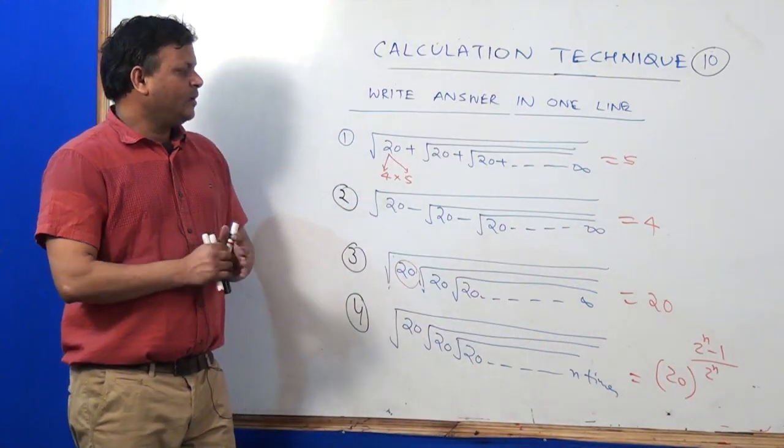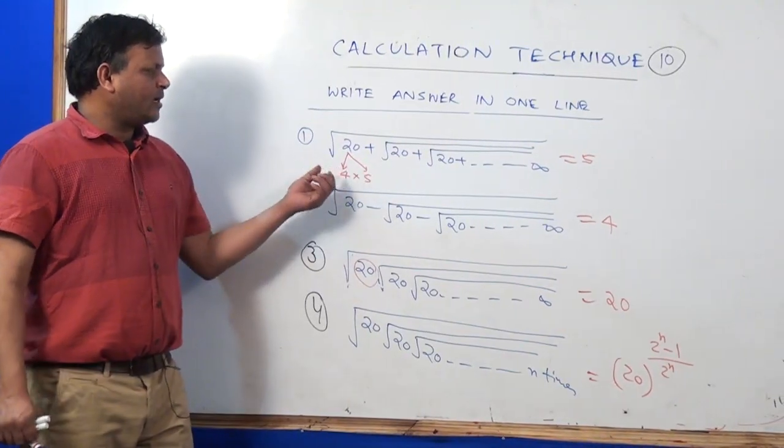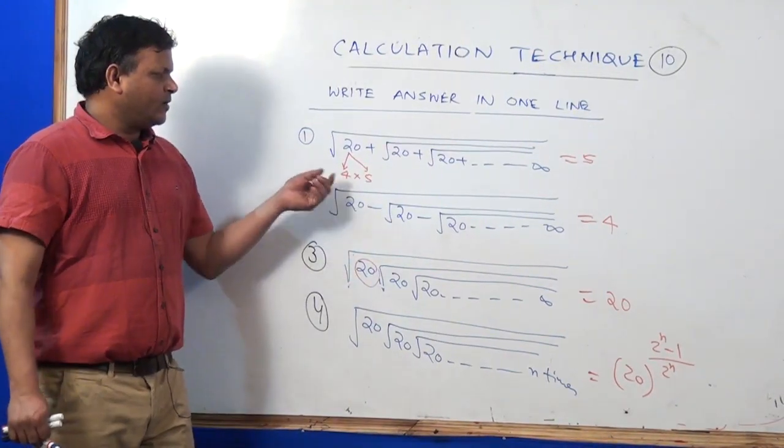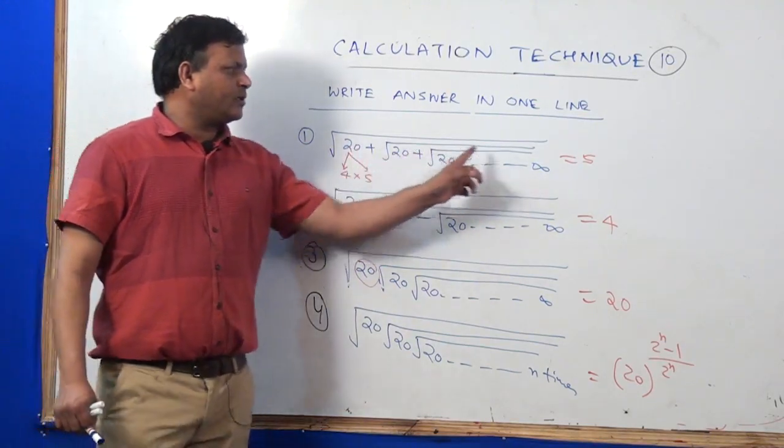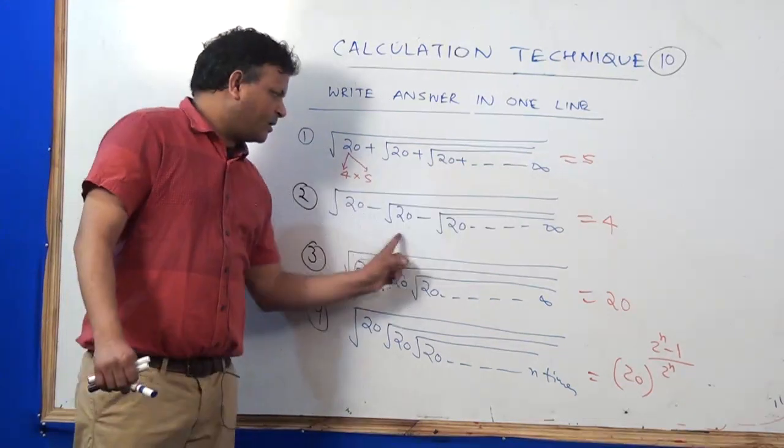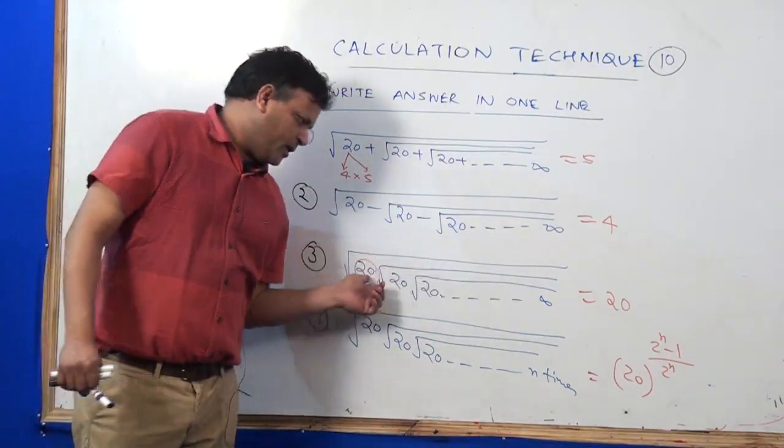Then, number 1 is 20. It will be 2 paths. If it is minus, it will be 4 into 5. If it is plus addition, it will be greater. If it is subtraction, it will be less. If it is into infinity, it will be the number.